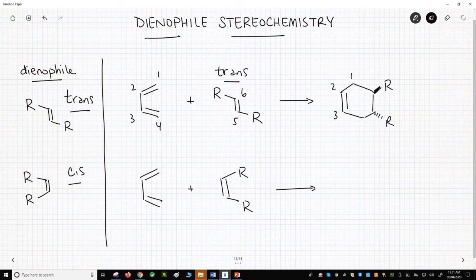Again, let's number everything. The R groups are trans on carbons 5 and 6, the carbons that were part of the dienophile. The trans nature of the R groups in the dienophile gives trans R groups in the cycloadduct.